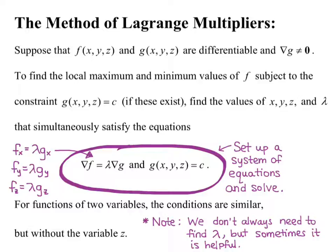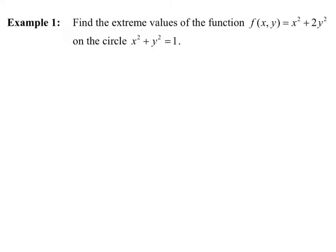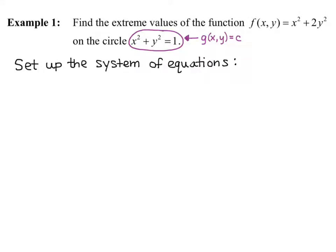To finish this video, let's do one example, and then we'll do more examples in class to solidify the method. Find the extreme values of the function f of xy equals x squared plus 2y squared on the circle x squared plus y squared equals 1. Whatever function equals a constant is your constraint, so x squared plus y squared equals 1 is the constraint g of xy equals c. The next step is to set up the system of equations by taking partial derivatives — these will be the three equations in the system.